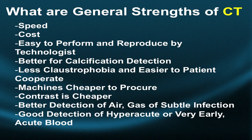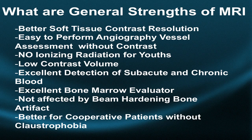Patients don't have to lie in the scanner as long. Contrast used for CT is cheaper to purchase and cheaper for the patient to pay for. There is better detection of air or gas, which may be manifestations of an early or subtle infection — important to detect. With injuries where blood is very fresh, especially in the brain, CT may be easier to interpret by a non-experienced person than an MRI.